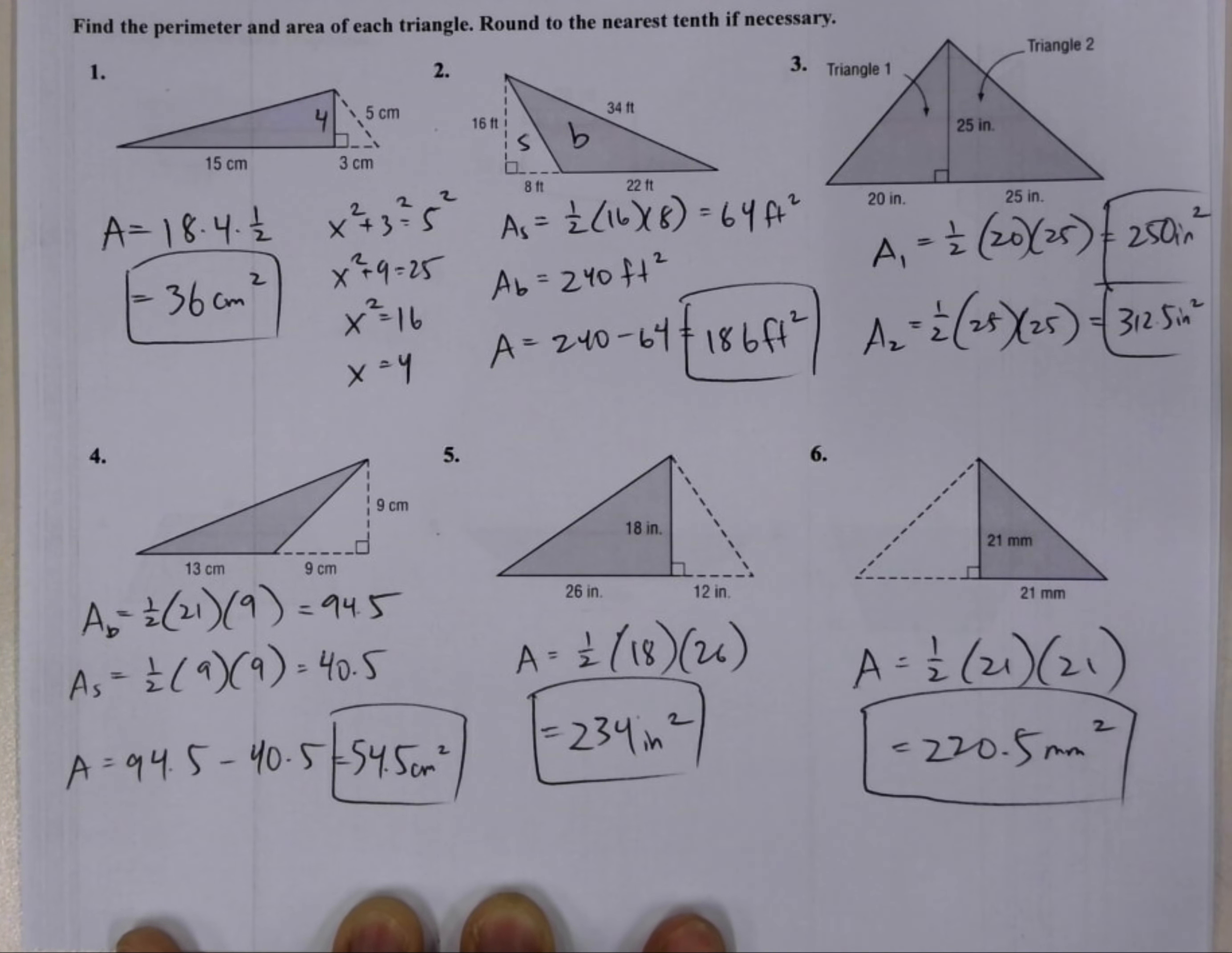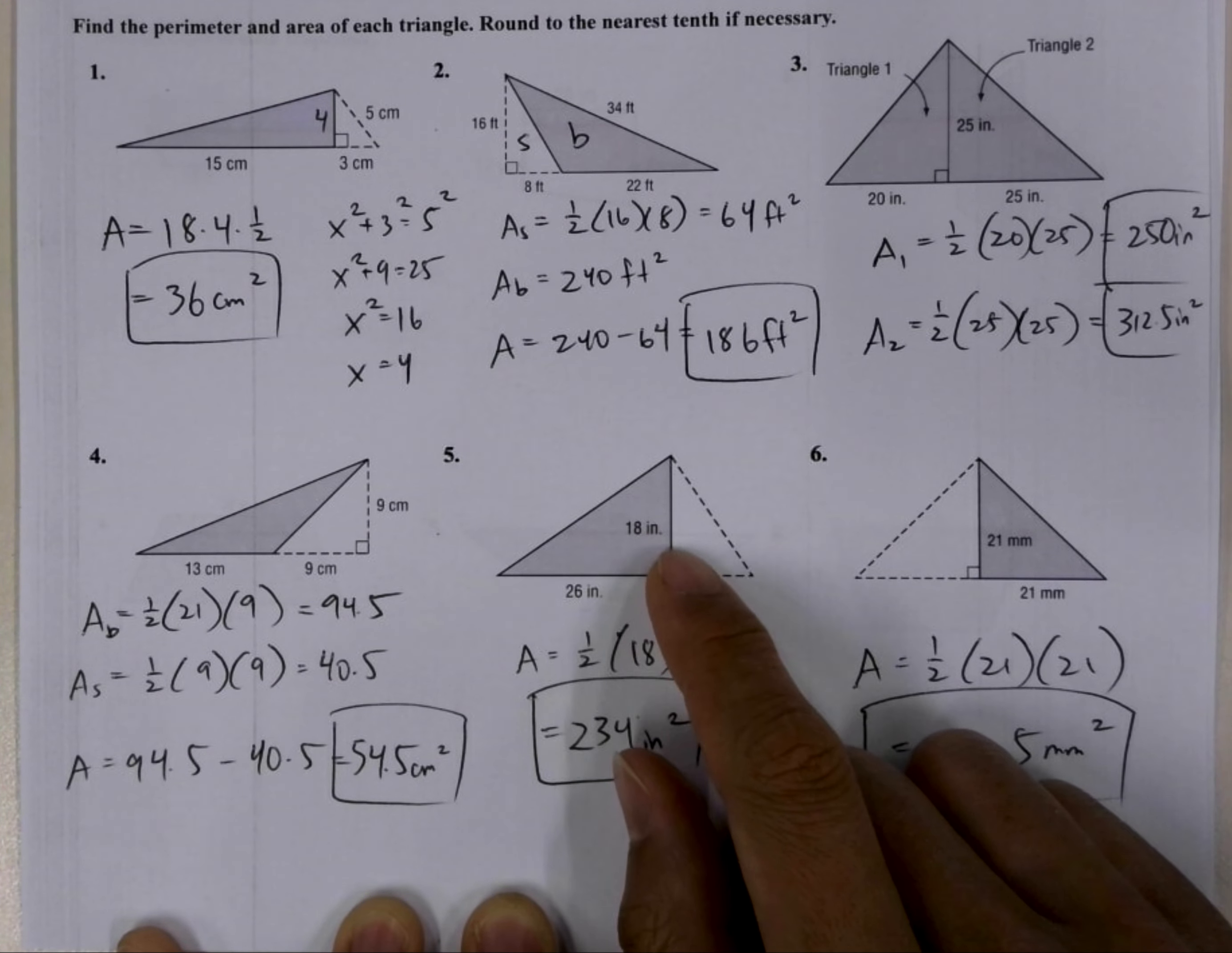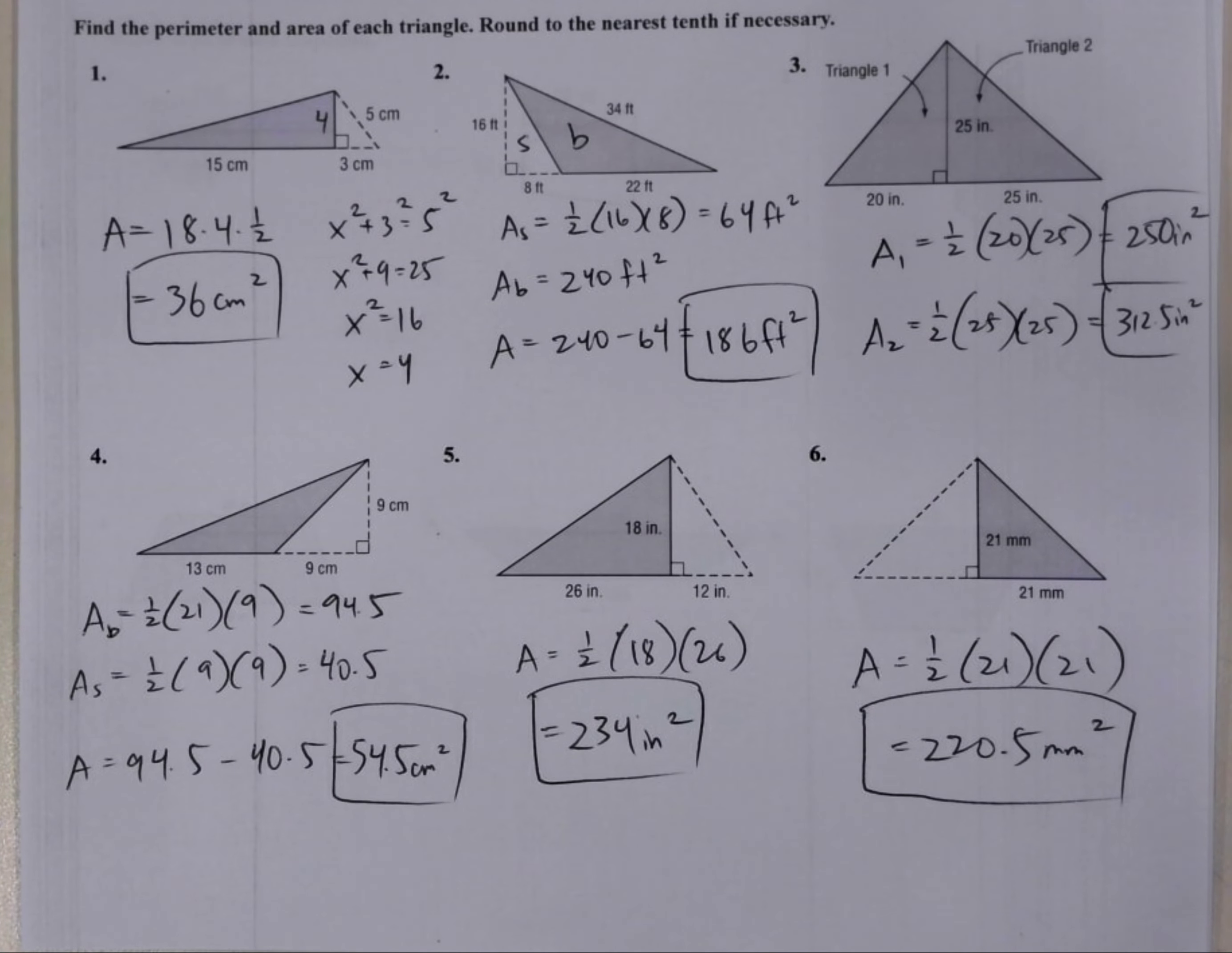They were just the height times the base. They give you this dotted extension to let you know that angle there is 90 degrees, and we need to know that this angle here is 90 degrees because that makes the 18 inches the height of the triangle. If that was not perpendicular to the base, it would not be the height. So those are our answers there.